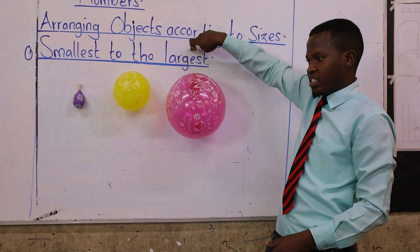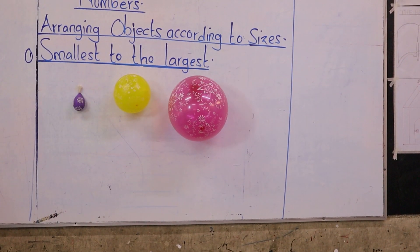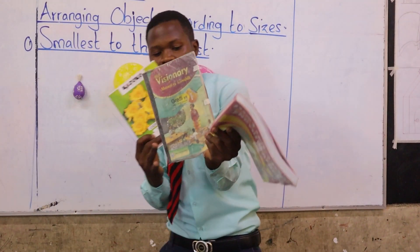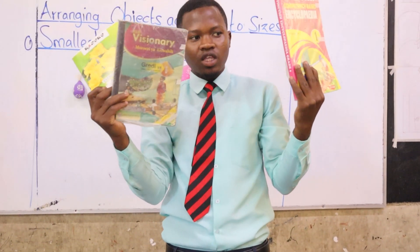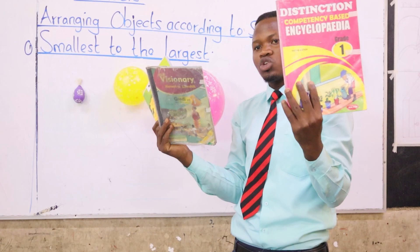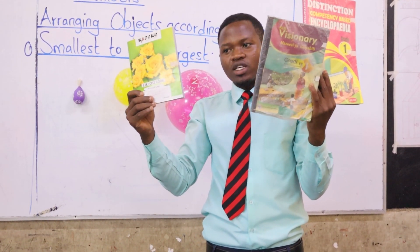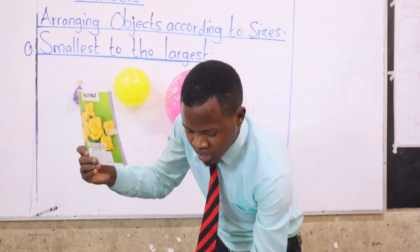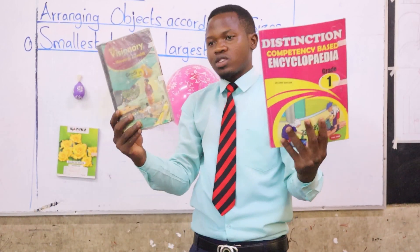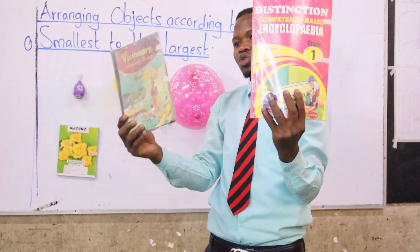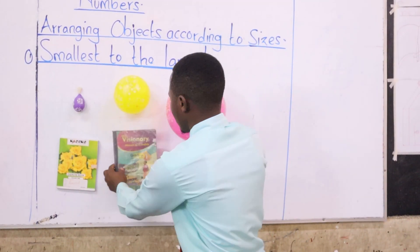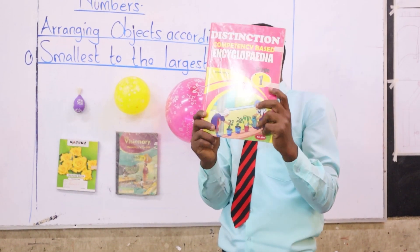The second example — I'm going to use my books. I have three books here. Can you see them? We have the exercise book, the textbook, and the distinction book. Among these three books, which one is the smallest? This one here. So we start with the smallest book. Now remaining with two books — the textbook and the distinction — which one is the smaller one? Very good, so it is followed by the textbook.